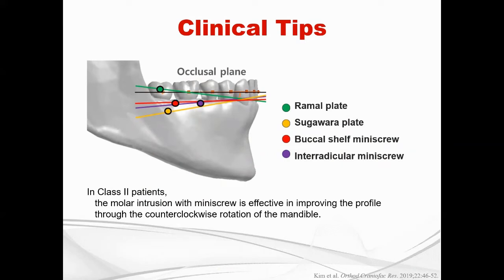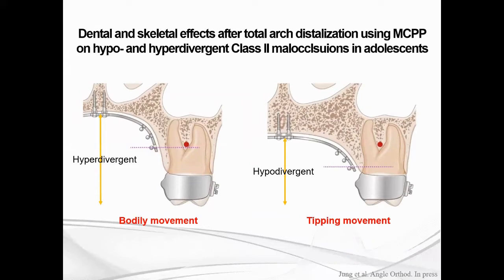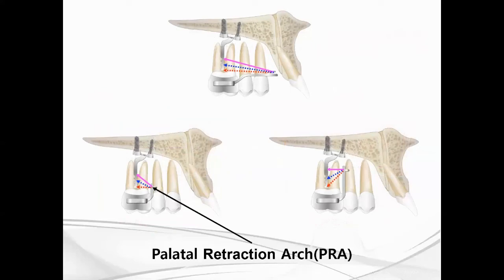There are several types of cases. In Class 2 patients, molar intrusion with a mini-screw is effective in improving the profile through counterclockwise rotation of the mandible. According to the skeletal pattern, the effect of MCPP might be different. For hypodivergent patients, it shows bodily movement with less tissue movement. However, for hyperdivergent patients, it shows tipping movement with more tissue movement. For efficient distalization, we have to adjust the length and height of the palatal retraction arch according to each patient's skeletal pattern.